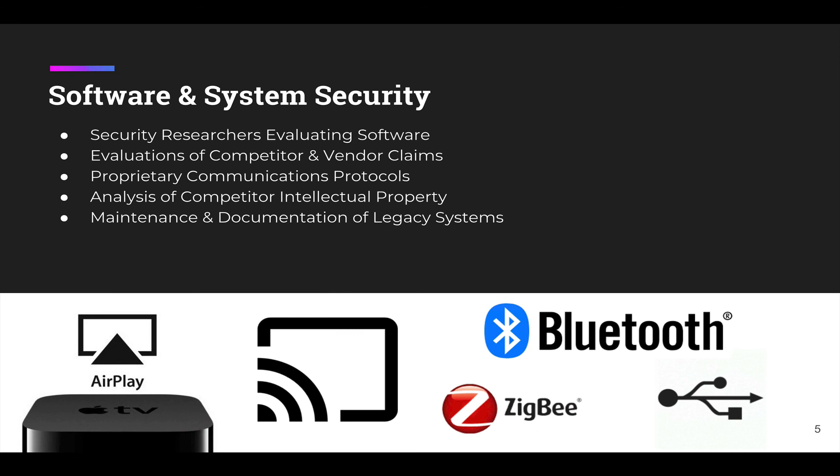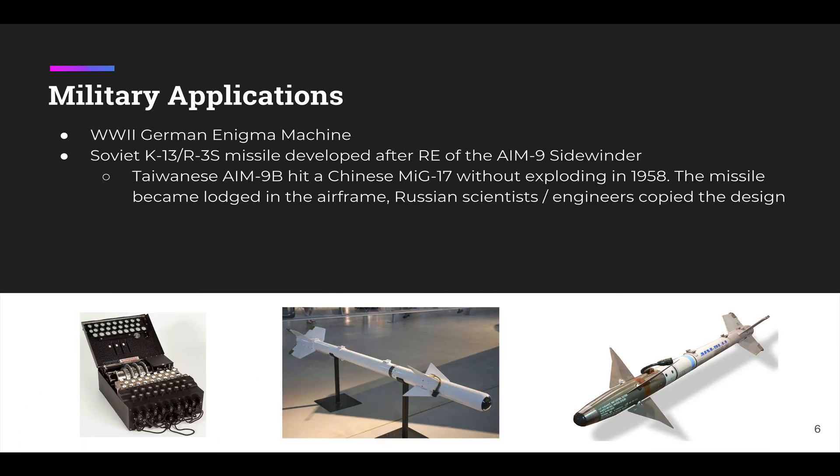There's a really cool story on Wikipedia about a Soviet missile that was developed after being reverse engineered from the AIM-9 Sidewinder. It turns out the missile was fired, lodged into a jet, which then landed — the missile was extracted and reverse engineered to develop their own missile based on that design. That's awesome.